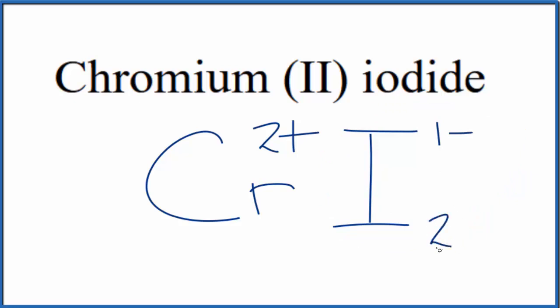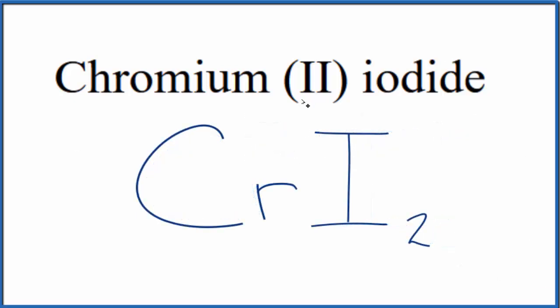Put a 2 out here, remove these symbols, and this is the formula for chromium (II) iodide: CrI2. This is Dr. B, and thanks for watching.